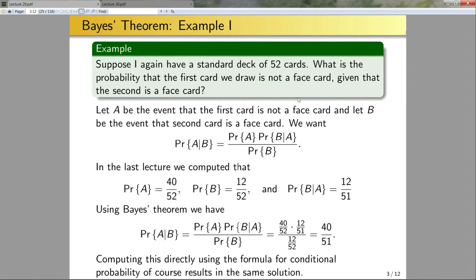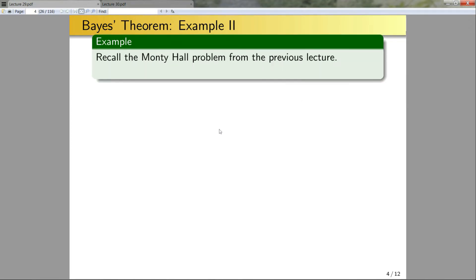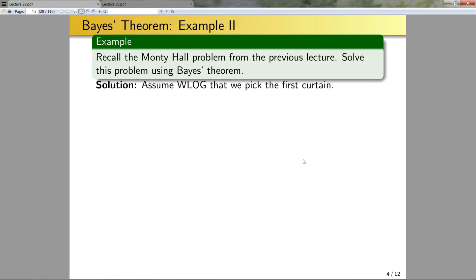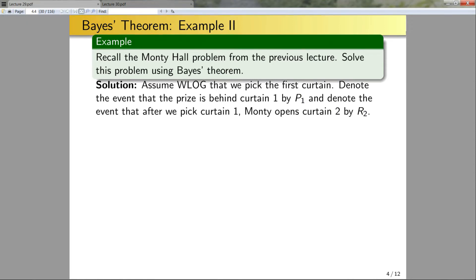Speaking of potentially hard to compute — the Monty Hall problem. Recall: we have three doors, behind one is a prize, behind the other two are goats. I want the prize. I pick one. Monty then reveals one curtain I didn't pick that has a goat behind it, and gives me the opportunity to switch. Assume without loss of generality that I pick the first curtain. Denote the event that the prize is behind curtain one by P1, and the event that Monty opens curtain two by R2.